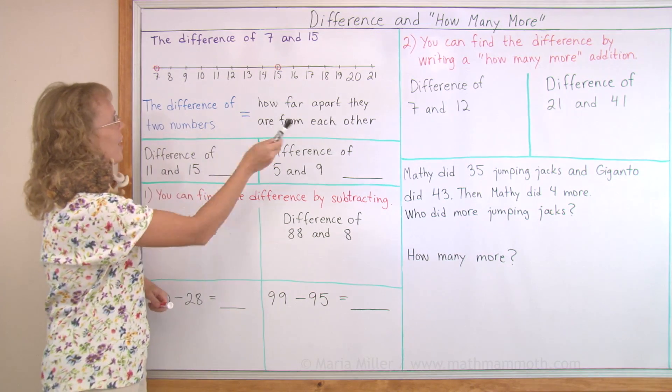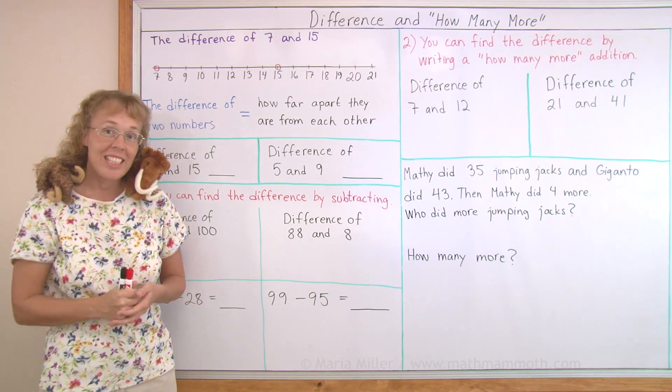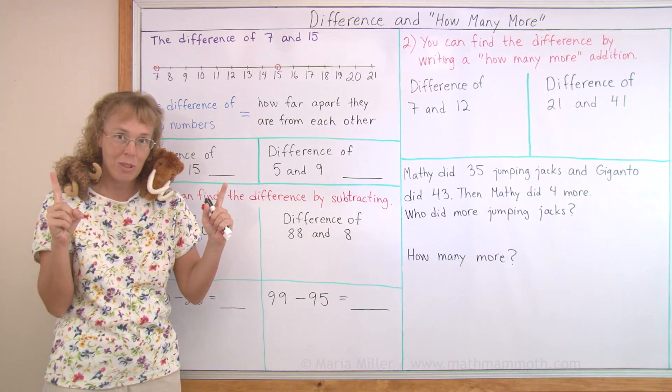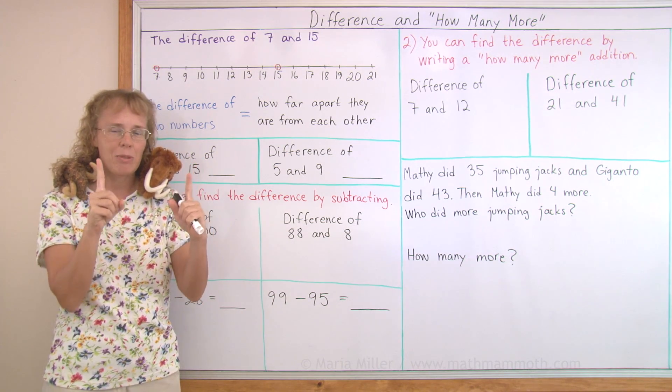Here I have a number line and we're going to solve the difference of 7 and 15. Now the difference of two numbers basically means how far apart those two numbers are on a number line. How much distance there is between two numbers.